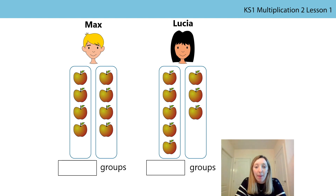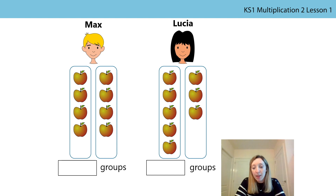Max and Lucia have some apples and each of them has put their apples into two groups. What do you notice about Max's and Lucia's apples? What's the same and what's different? Press pause on the video and have a little think. They both have two groups of apples — that's the same. Did you notice anything else?